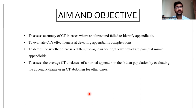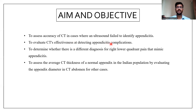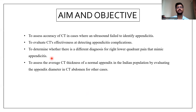The aims and objectives of this study are: first, to assess the accuracy of CT in cases where ultrasound has failed to identify appendicitis; second, to evaluate CT's effectiveness in detecting appendicitis complications; third, to determine differential diagnoses for right lower quadrant pain that mimic appendicitis; and finally, to assess the average CT thickness of the normal appendix in the Indian population by evaluating appendix diameter in CT abdomen for other cases.